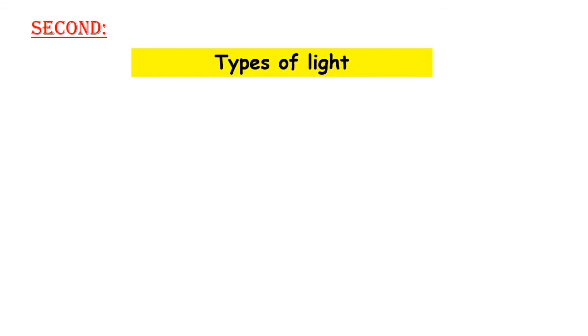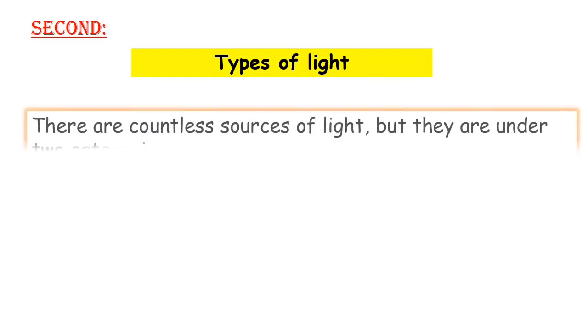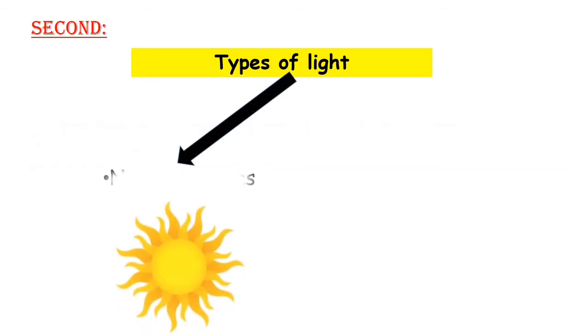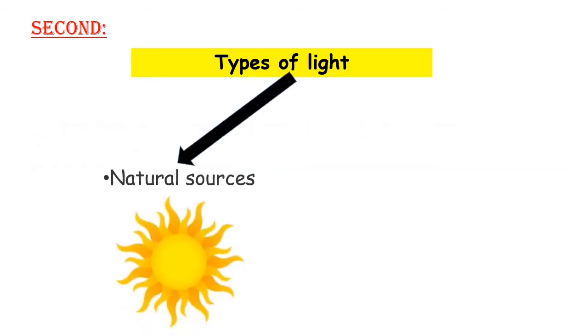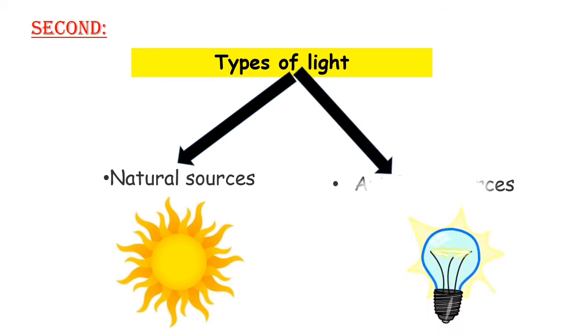Second, types of light. There are countless sources of light but they are under two categories: Natural sources and artificial sources.